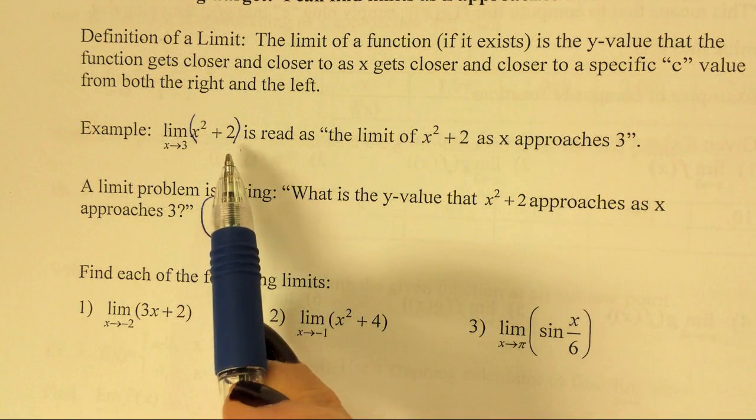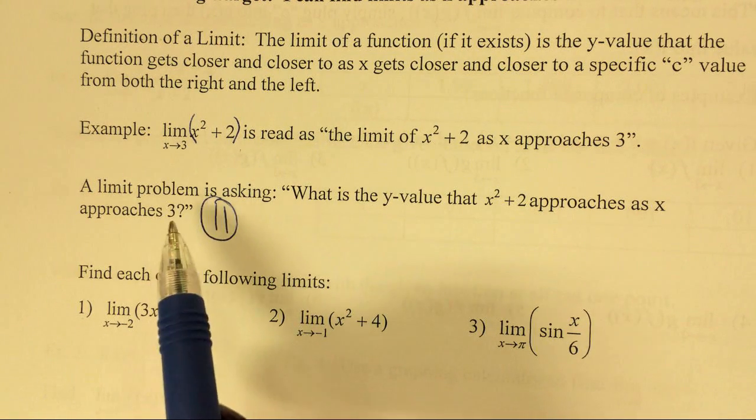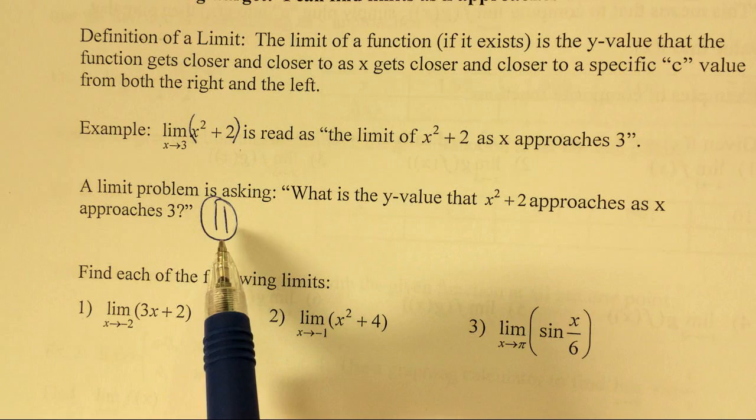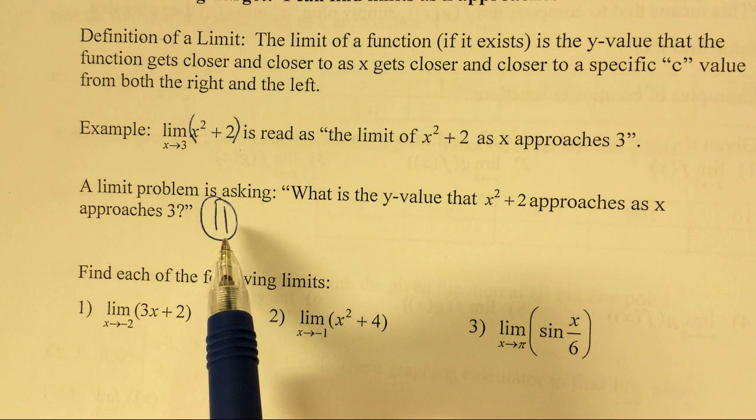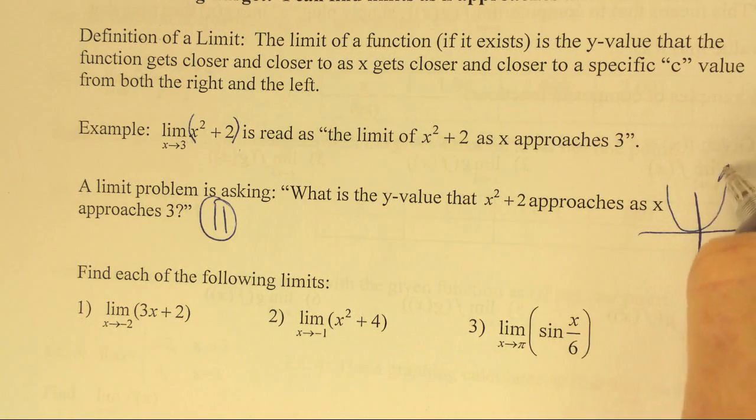If I were looking at a graph of this, what that tells me is that as x gets closer and closer to 3, the y-value that we're approaching is going to be 11. So I would know this point right here would exist on the parabola, the point being 3, 11.